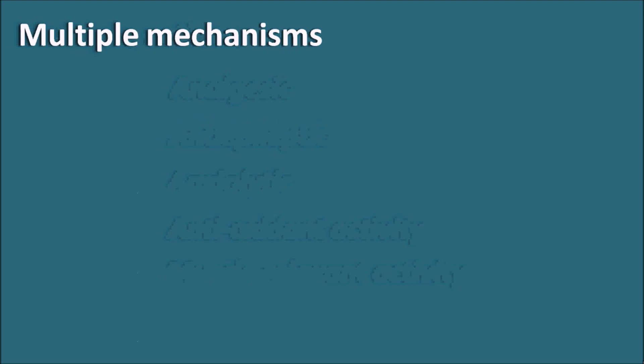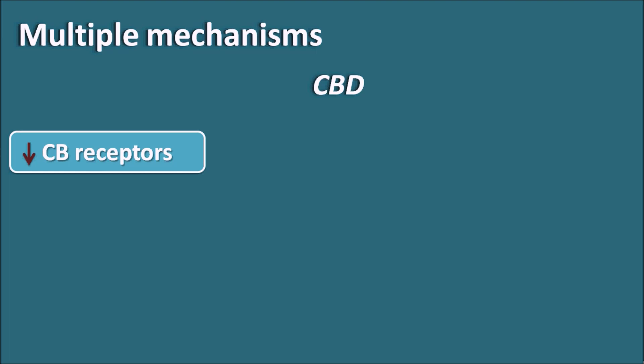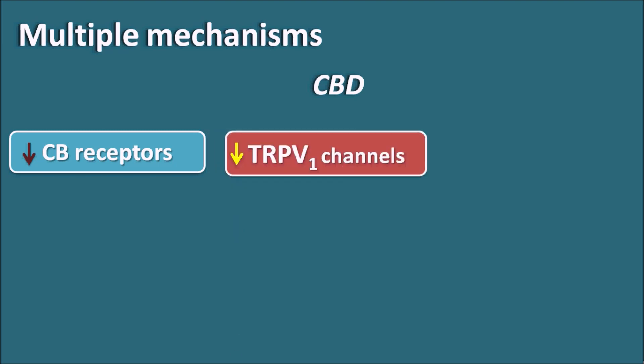These drugs act by multiple mechanisms. Cannabidiol is one drug that is therapeutically used and it can show its action on many types of receptors and targets. One of the important ones is that it inhibits the cannabinoid CB receptors, by which it can show anxiolytic as well as analgesic activity. This drug can also block the TRPV1 channels, which are ion channels responsible for neuronal excitation.